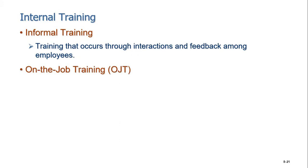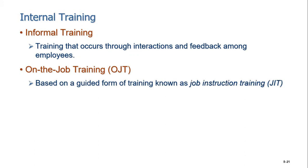On-the-job training involves assigning a new engineer or new employee with a senior employee. When the new person performs a job, the senior one actually guides and instructs them — telling them the correct way to do things, because certain methods might cause problems. A senior is always there to guide the junior one.